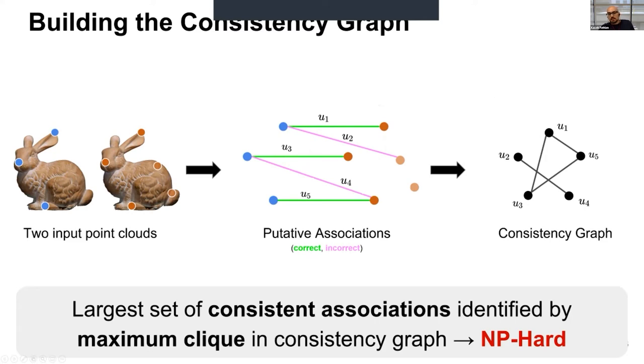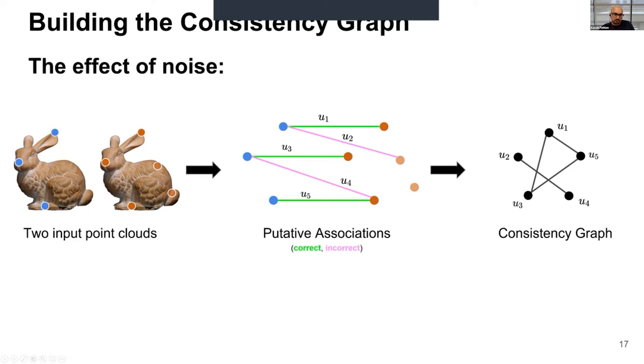Then the claim is that the largest set of consistent associations is the maximum clique in this graph. A clique is a fully connected component of the graph. And here, if you look at this U1, U5, U3, that's a clique, that's a triangle. And if I take these three, it's going to be the correct association. So really, this is the key idea.